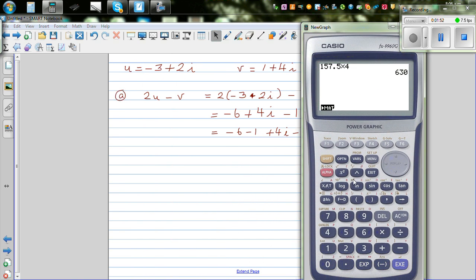If you go to option complex number, there is f3. I'll type in 2 bracket minus 3 plus 2i. You press f1, that's i, minus v. v is 1 plus 4i. This is how you can check your answer, which is minus 7.